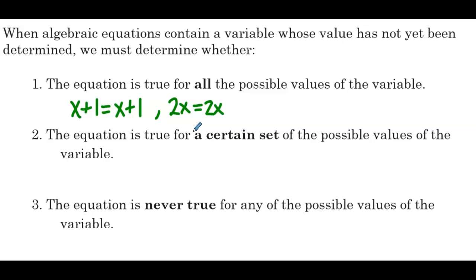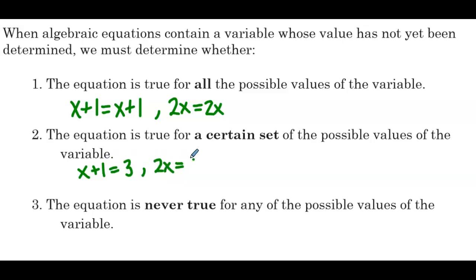In the next case, the equation is true for a certain set of possible values, so we only have a fixed number of x values that will make the equation correct. For instance, an equation like x plus 1 equals 3 — the only x value that makes that true is 2. Another equation, 2x equals 8 — the only x value that makes that true is 4.